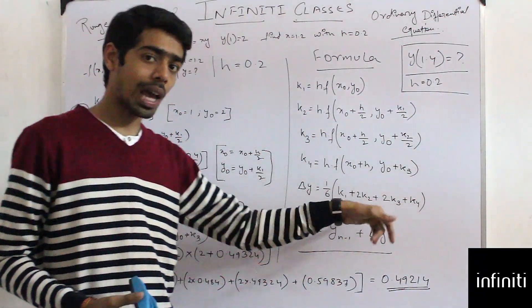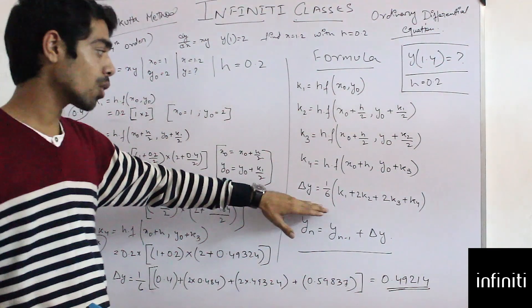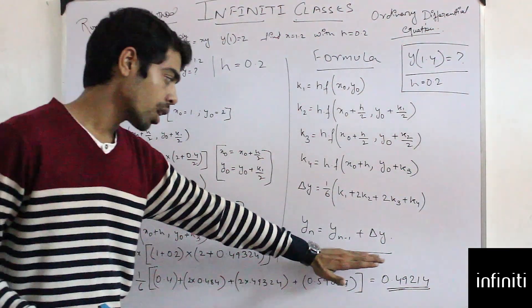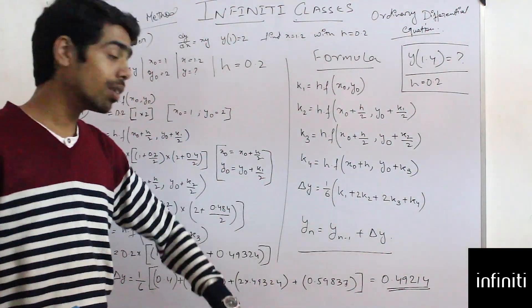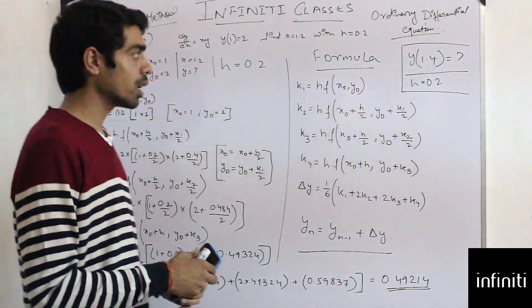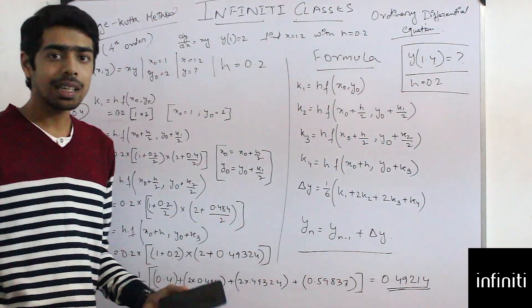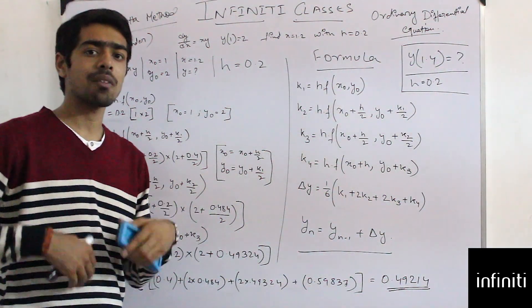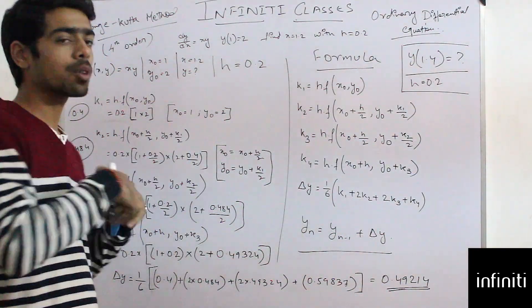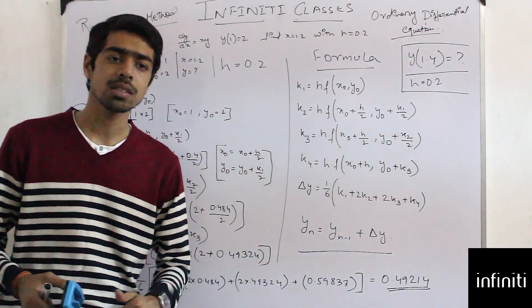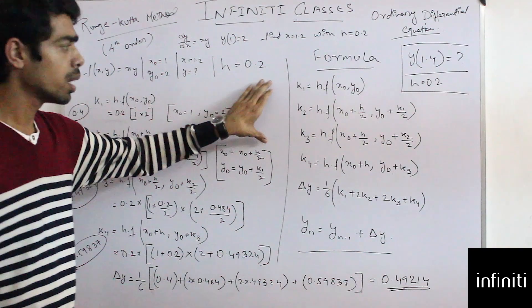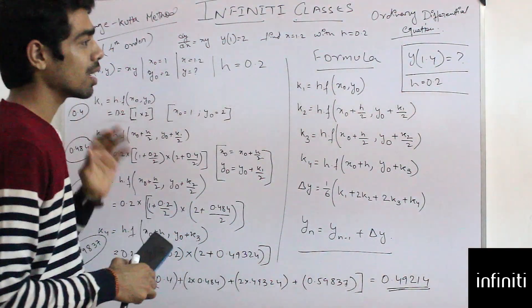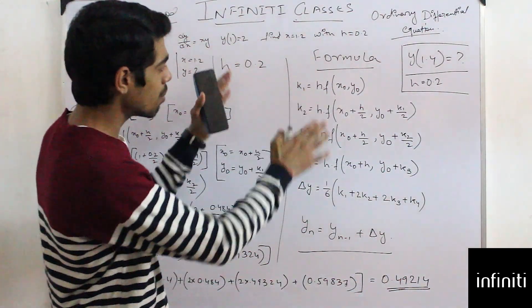In the Runge-Kutta method, we calculate 4k values and a delta y value. After calculating delta y, we put it into the main formula to get our answer. It is quite lengthy but similar to Euler's method, where we put values into a formula and get the answer. The main difference is that Runge-Kutta has a bigger formula.